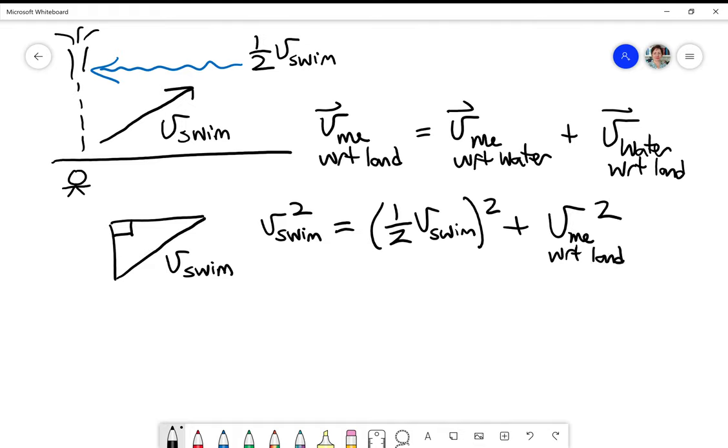Now you'll notice by comparing these two equations that adding things as vectors does not always go right into an a, b, and c form of the Pythagorean theorem. You need to think about what the right angle is where this is one half V swim.